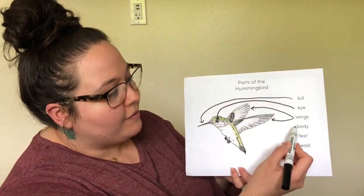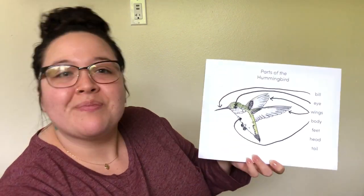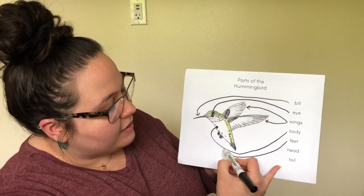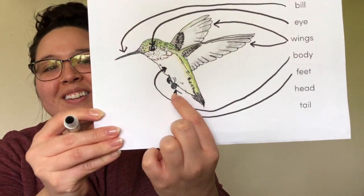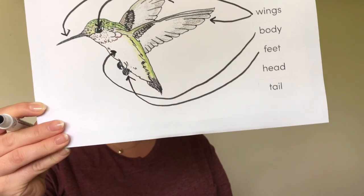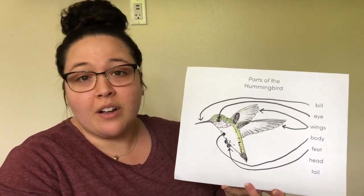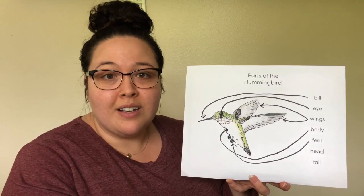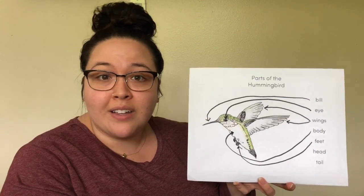Now we have the body. And then we have the feet. Something interesting about the hummingbird's feet is that they are very tiny, and when flying you can barely spot them. The hummingbird's feet are actually not for walking — a hummingbird doesn't walk. The feet are only so that it can perch and hold onto and sit on a branch, resting after all that flying and flapping of wings.